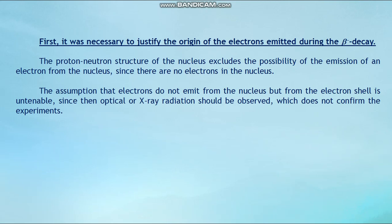The proton-neutron structure of the nucleus excludes the possibility of an electron being emitted from the nucleus, since there are no electrons in the nucleus. The assumption that electrons escape from the atomic shell is also untenable, since then optical or x-ray radiation should be observed, which is not confirmed by experiment.